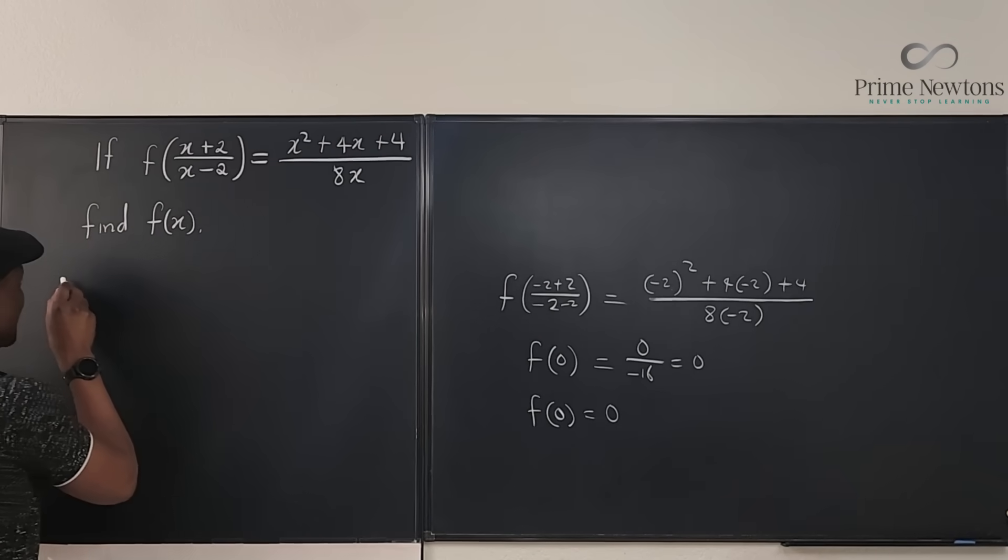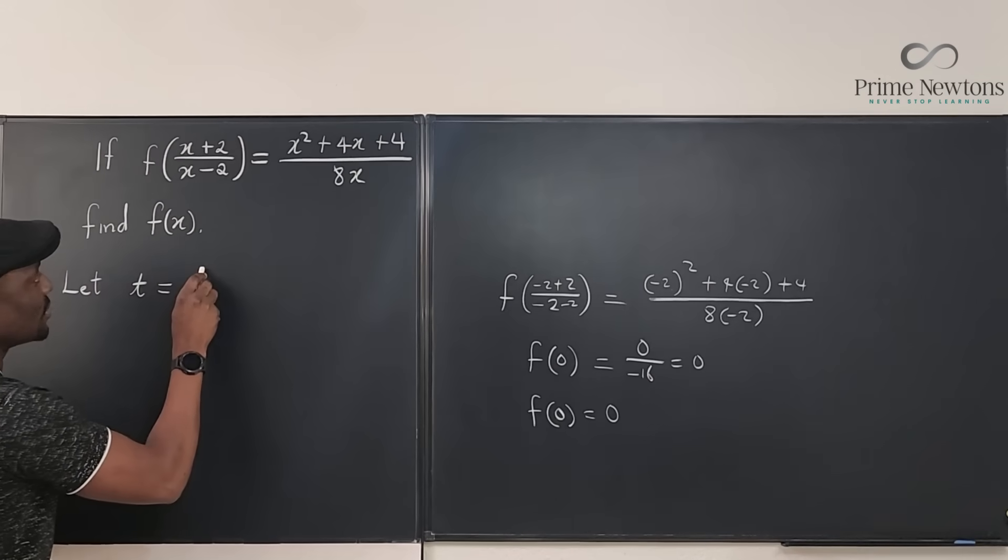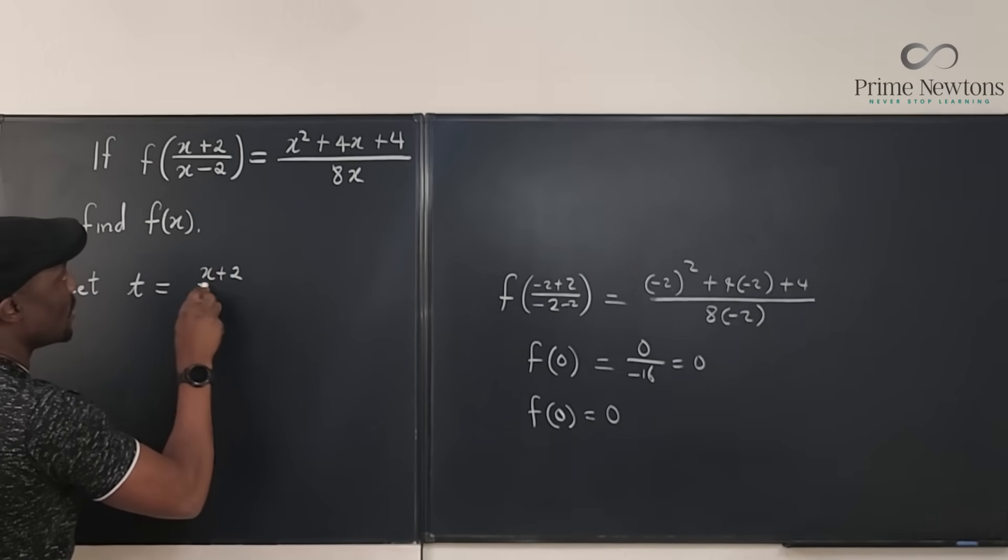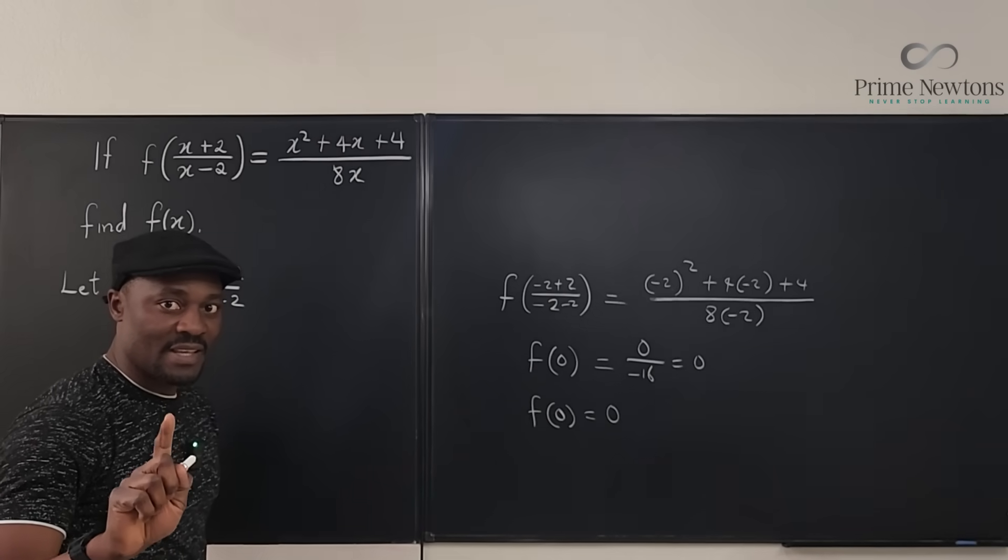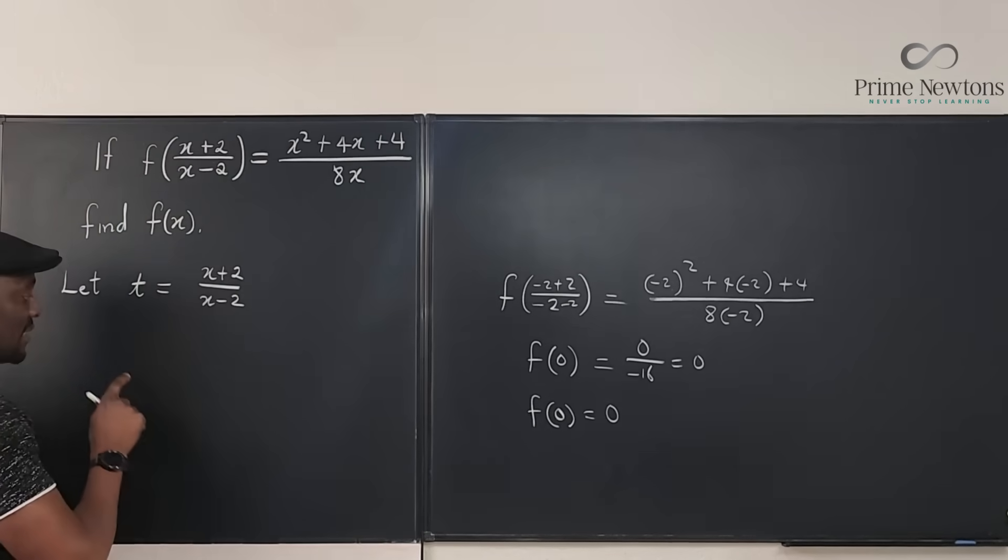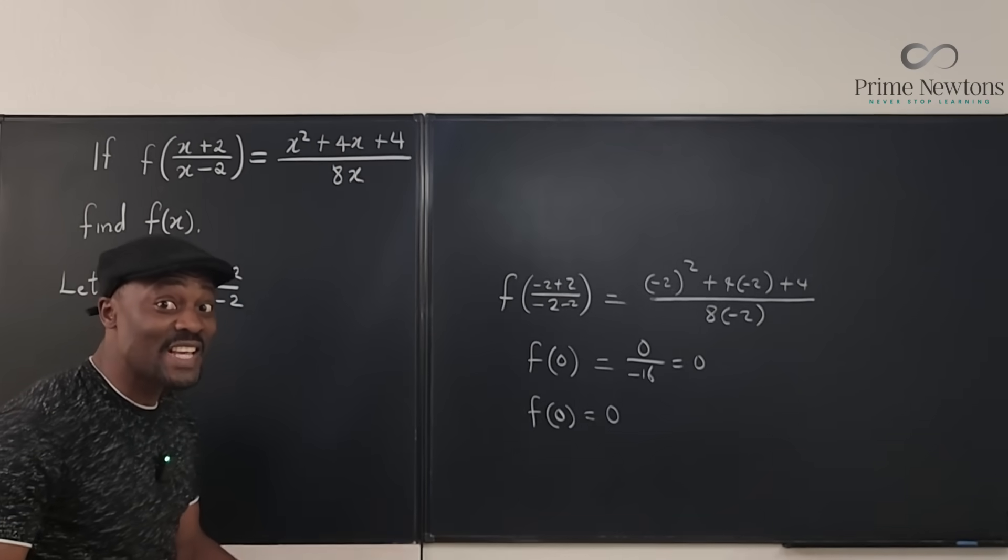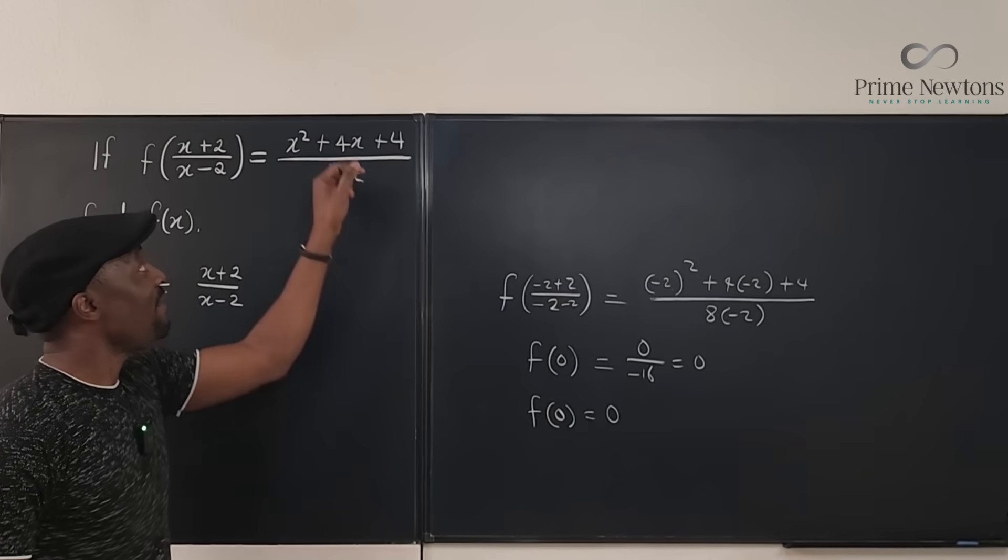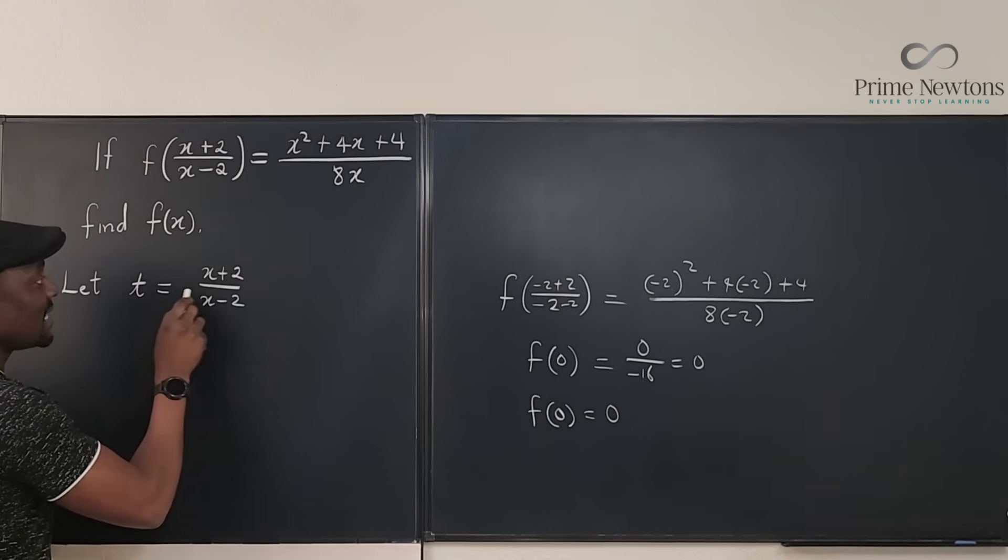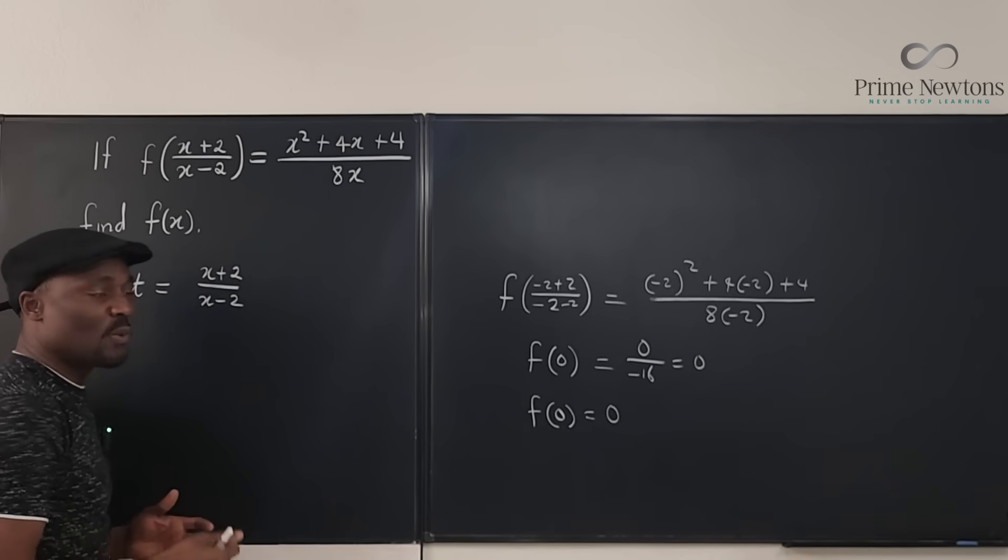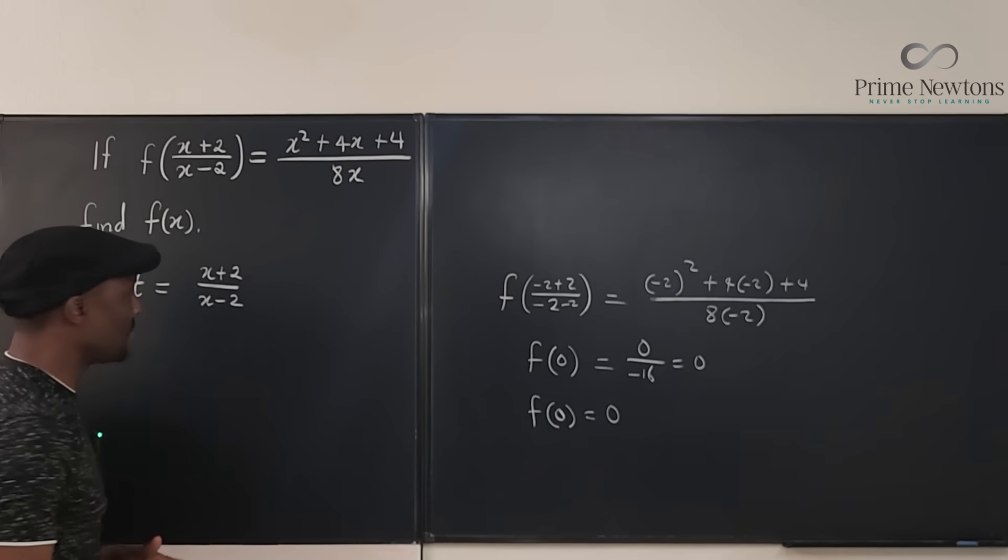So we're going to say let t, I like using t, be equal to x plus 2 over x minus 2. Okay, so that when I write this function next, I'm going to say f of t and that's it. But the right-hand side is going to go crazy. Why? Because we have to replace x with t. So if we say t equals x plus 2 over x minus 2, well, we need to isolate x so we can replace it with something in terms of t.